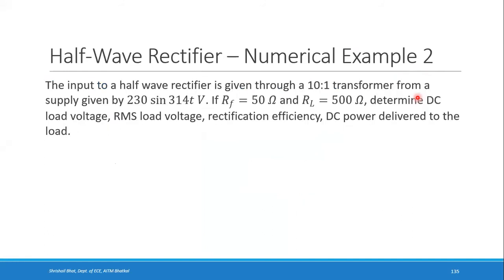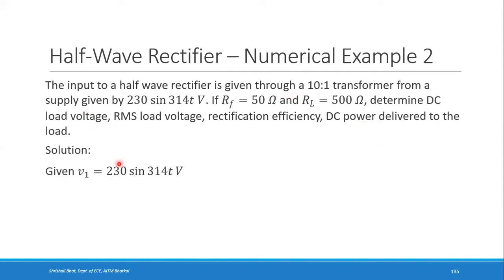The second example: the input to a half wave rectifier is given through a 10:1 step-down transformer from a supply of 230·sin(314t) volts. RF = 50 ohms, RL = 500 ohms. Determine DC load voltage, RMS load voltage, rectification efficiency, and DC power delivered to the load.